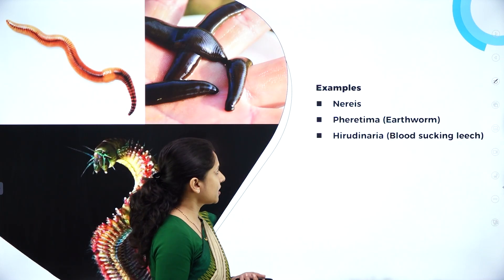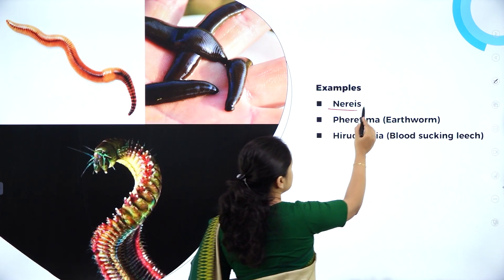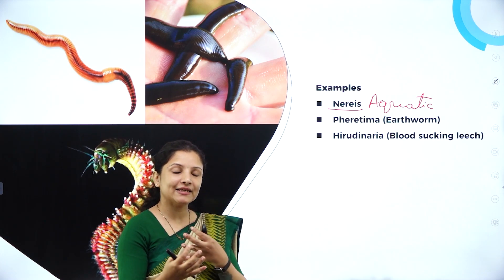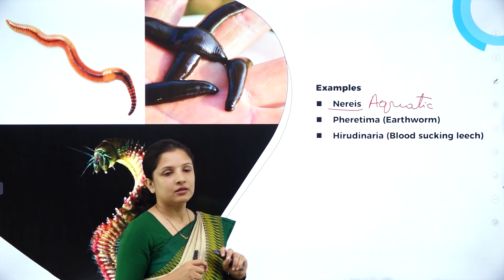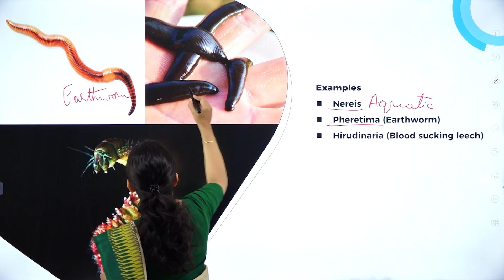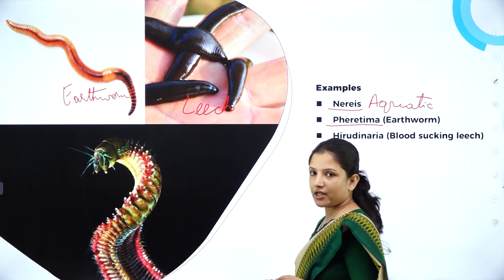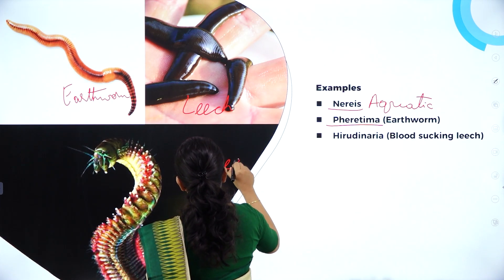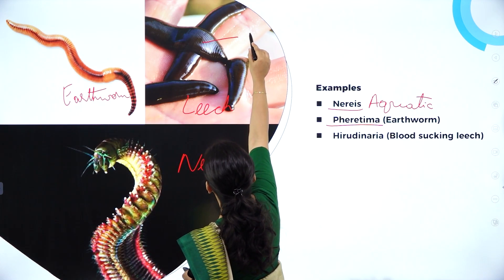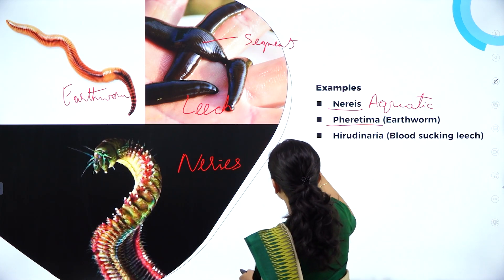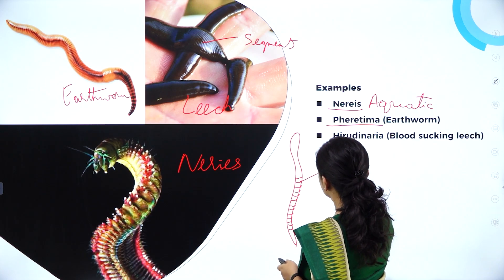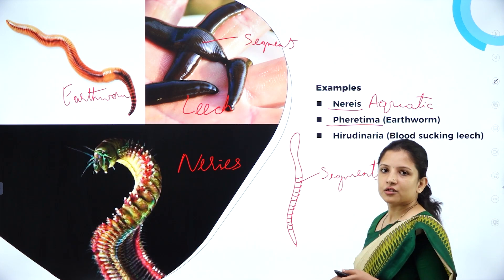Looking at examples under Phylum Annelida: we have Nereis which is an aquatic annelid — their characteristic is that they have parapodia, which distinguishes them from earthworm and leech. Earthworm is also called Pheretima, and leech — the blood-sucking leech — is also called Hirudinaria. If you look at their entire body they have segments, all of these have segments. Segments are like ring-like lines over the entire body, and the type of segmentation is metamerism.